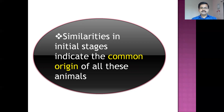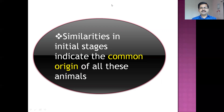So this evidence, that is the embryological evidence, also supports the theory of evolution. Until now we have seen six evidences of evolution: first morphological evidence, second anatomical evidence, third vestigial organs, fourth paleontological evidence, fifth connecting links, and the sixth is the embryological evidence. We will see the next point in the next video. Thank you.